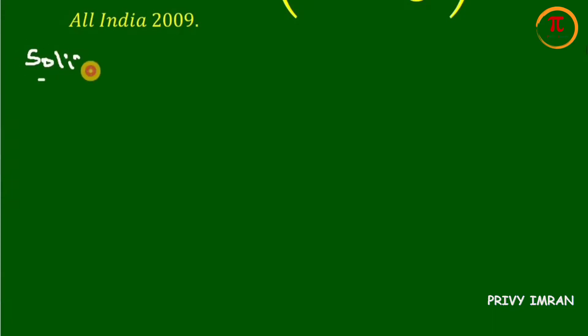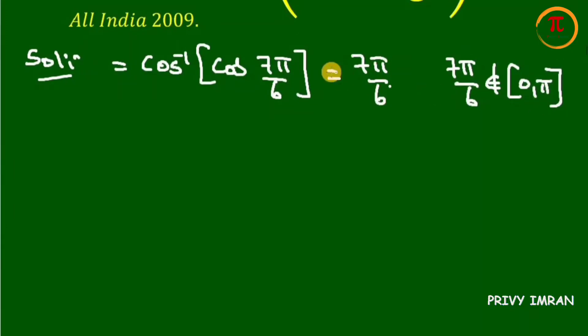First of all, let me consider the given function cos inverse of cos 7 pi divided by 6. If I write my answer as 7 pi divided by 6, then 7 pi divided by 6 does not lie in between 0 to pi. Hence it can't be equal to 7 pi divided by 6.